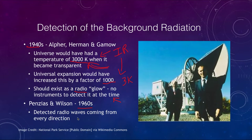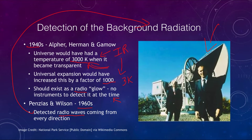In the 1960s, Penzias and Wilson actually detected this radiation. They were not looking for the cosmic background radiation — they were trying to detect other radio signals and get the best signals they possibly could. What they found was radio waves coming from every direction they looked. They searched for sources of interference and tried to eliminate all of them, but eventually found they simply could not — there was a faint glow coming from everywhere in the universe. This was the detection of the cosmic background radiation.